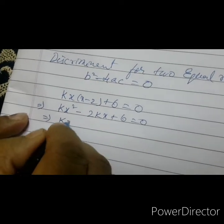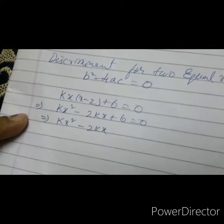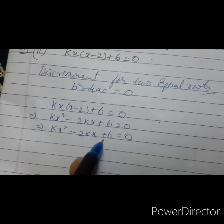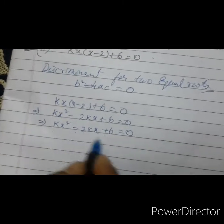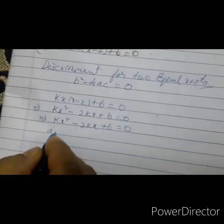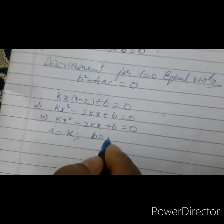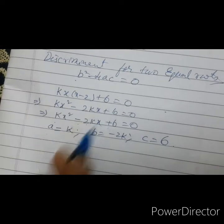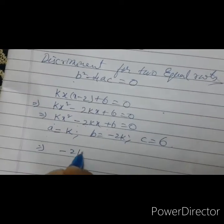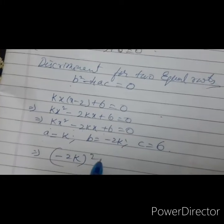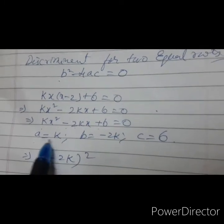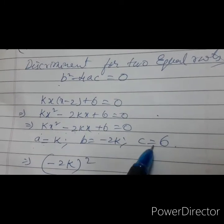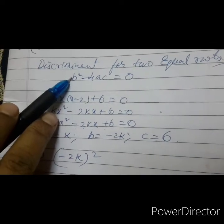So the equation is Kx squared minus 2Kx plus 6 equals to 0. What is a, b, and c from here? a equals to K, b equals to minus 2K, c equals to 6. Substitute these values in b squared minus 4ac equals to 0.